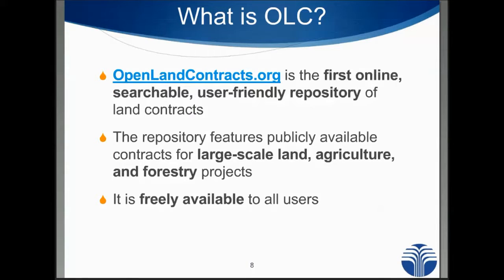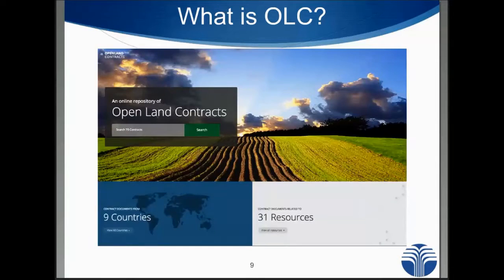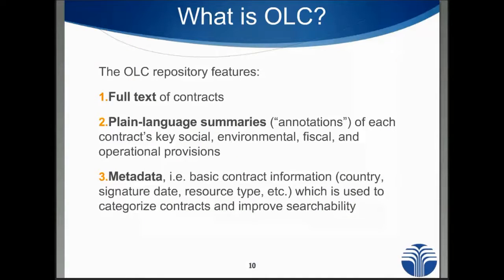Open Land Contracts is a repository of these investment contracts. It features publicly available contracts as they apply to land, agriculture, and forestry projects, and it's freely available to all users. This is what the home screen of Open Land Contracts, or OLC, looks like. The database features the full text of contracts in both text form and PDF scan of the contract itself. We also have plain language summaries or annotations for the contract's key social, environmental, fiscal, and operational provisions, designed to make the contract more understandable for people without legal training.